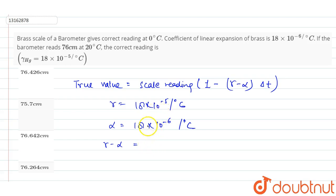Gamma minus alpha equals 18 times 10 to the power minus 5 minus 1.8 times 10 to the power minus 5, which will be equal to 16.2 times 10 to the power minus 5 per degree Celsius.